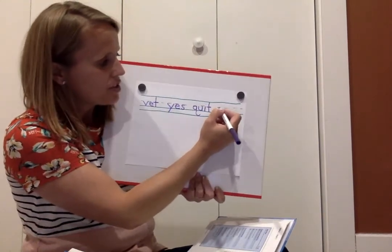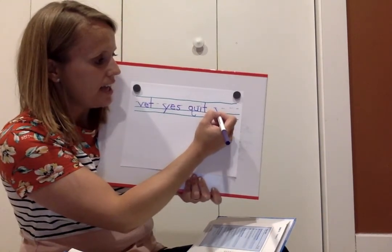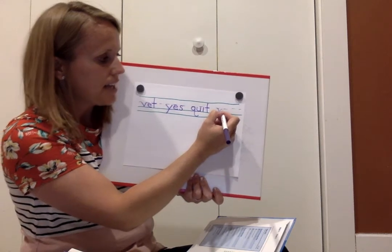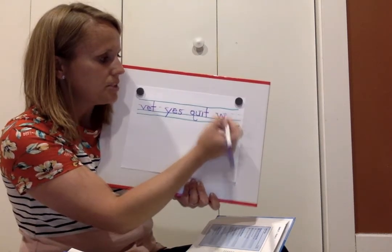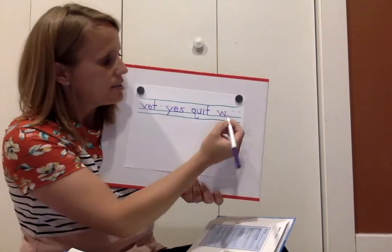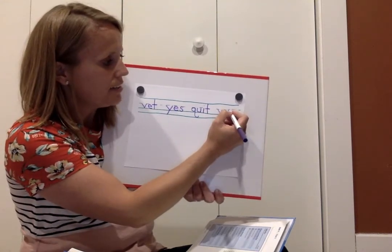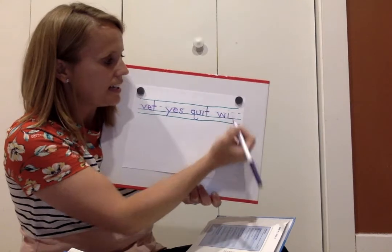To make W, start on the plain line, slide to the grass line, slide up to the plain line, down to the grass line, up to the plain line. To make I, start on the plain line, go down to the grass line, and add a dot.